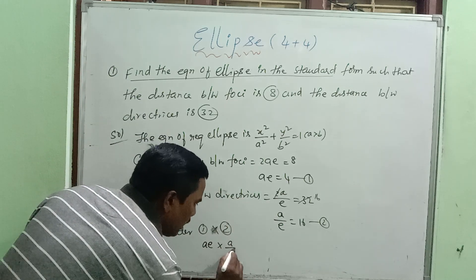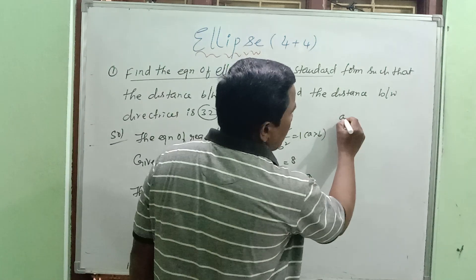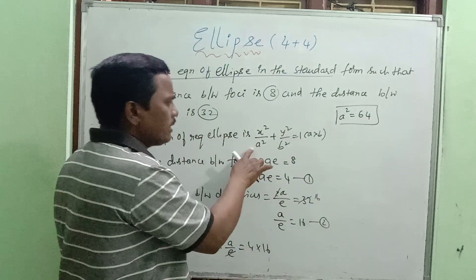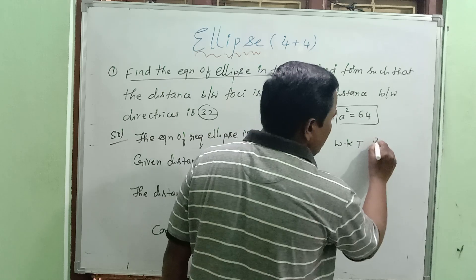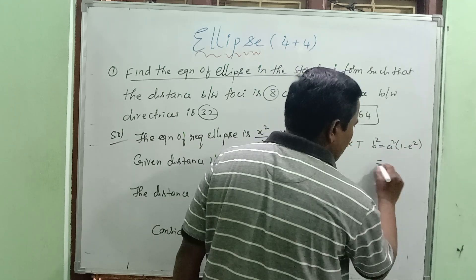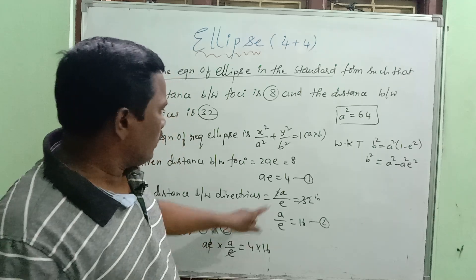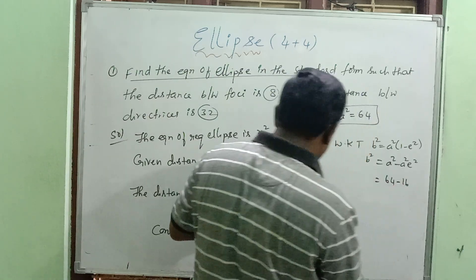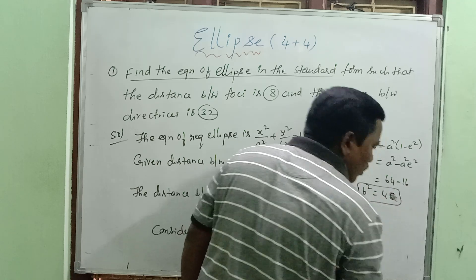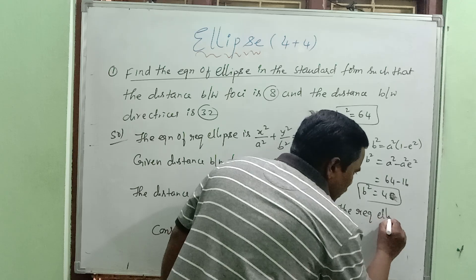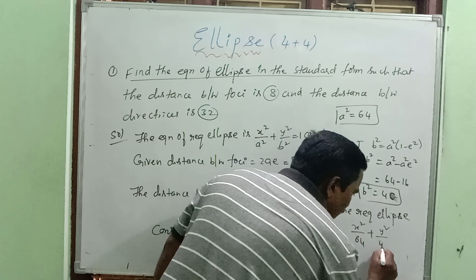Multiplying the two equations: ae × a/e = 4 × 16, so a² = 64. Now using b² = a²(1 - e²) = a² - a²e². With a² = 64 and ae = 4, so a²e² = 16, therefore b² = 64 - 16 = 48. The required ellipse is x²/64 + y²/48 = 1.